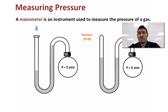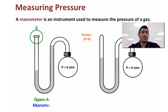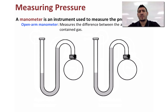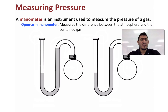A manometer is an instrument used to measure the pressure of a gas. We have two types: the open arm manometer, which is open to the outside atmosphere, and the closed arm manometer, which is not open to the outside atmosphere. Let's start first with the open arm manometer, which measures the difference between the atmosphere and the contained gas.